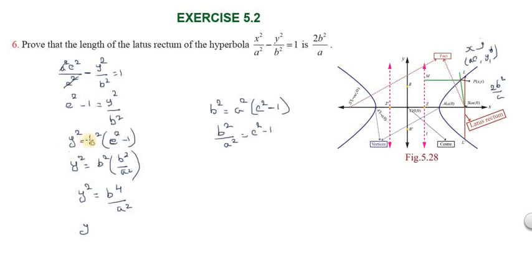Taking the square root of both sides: y = ±b²/a. So the y-value is plus or minus b² by a.